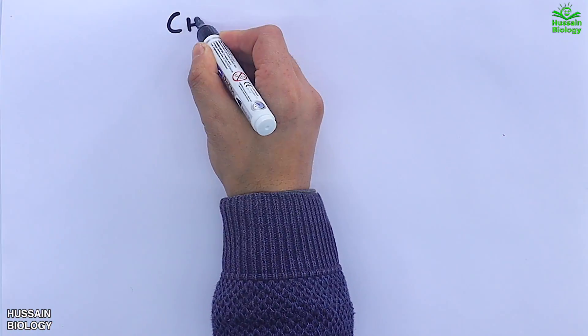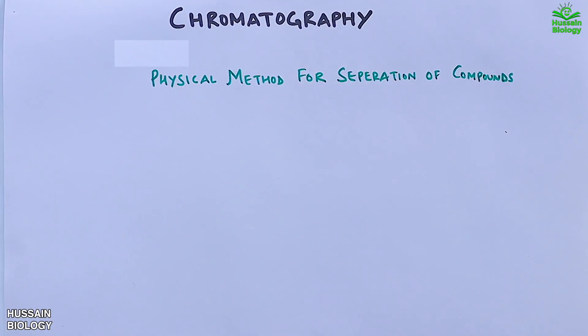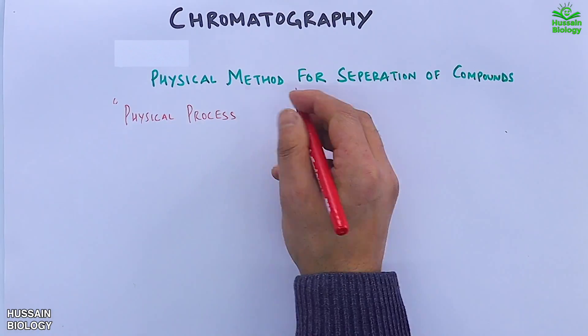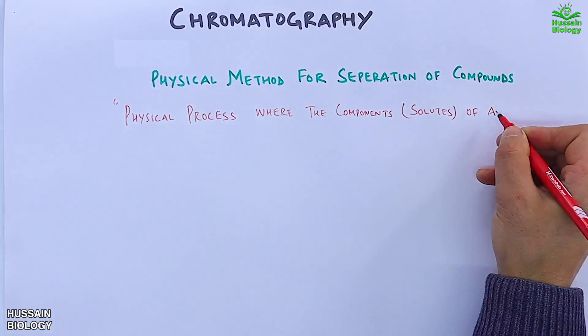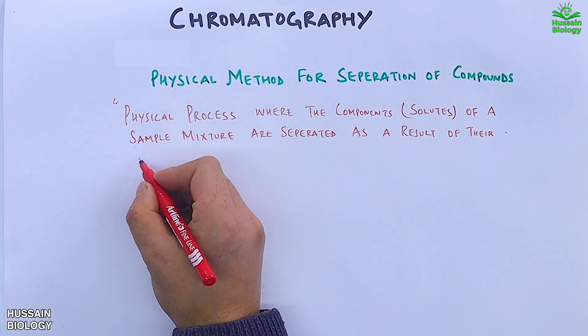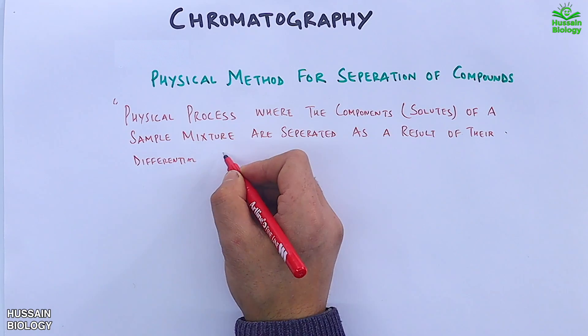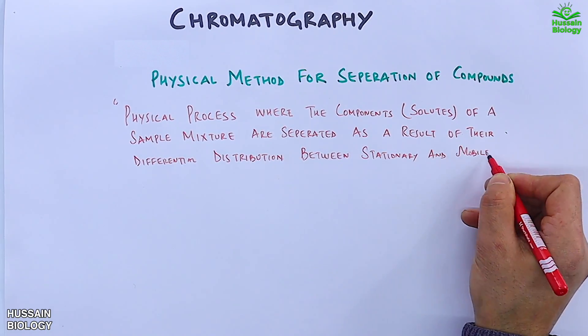In this video we will be discussing chromatography. It is a physical method for separation of compounds. It involves a physical process where the components of a sample mixture are separated as a result of their differential distribution between stationary and mobile phase.